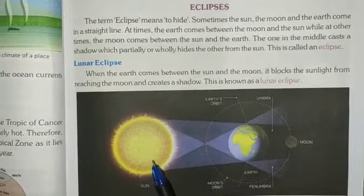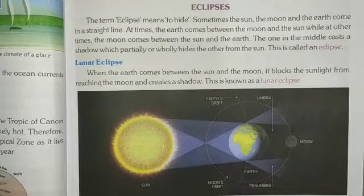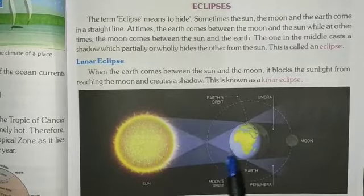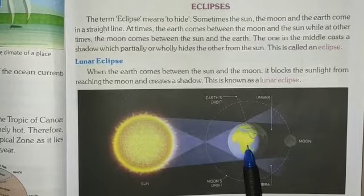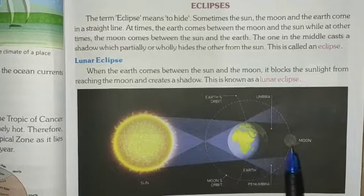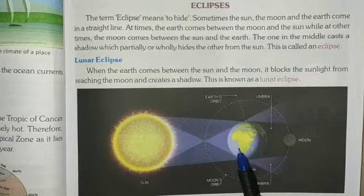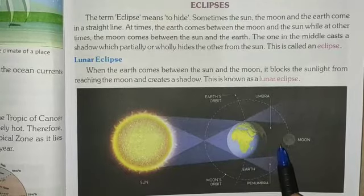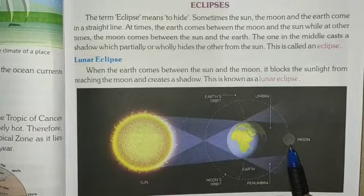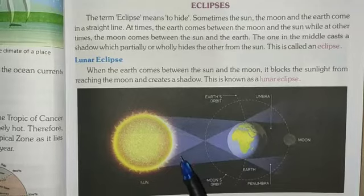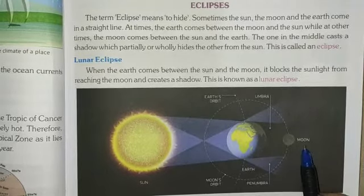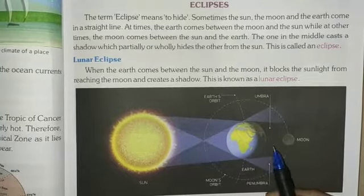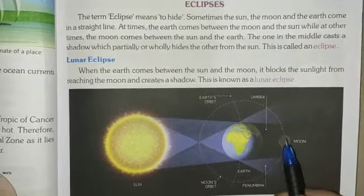What is a lunar eclipse? You will see in this picture. This is a picture of a lunar eclipse. When the earth comes between the sun and the moon, it blocks the sunlight from reaching the moon and creates a shadow. This is known as a lunar eclipse.